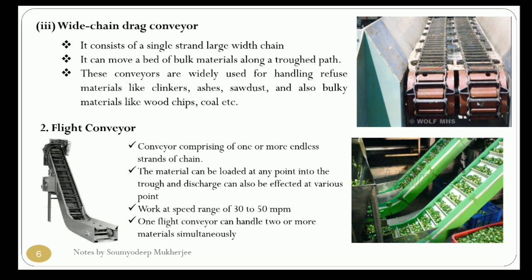This type of conveyor is used for handling coal, ashes, sands, gravel, ore, wood chips, sawdust, chemicals, grains, and cereals. It is also used for loading bunkers and bins, and under the floor for removal of metal chips and cut pieces in machine shop floors where machining is going on.